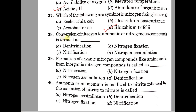Question number 38. Conversion of nitrogen to ammonia or nitrogenous compounds is termed as A: Denitrification, B: Nitrogen fixation, C: Nitrification, D: Nitrogen assimilation. The correct one is B, Nitrogen fixation.